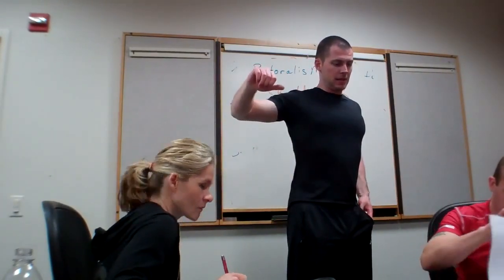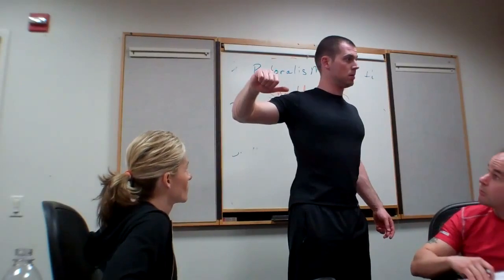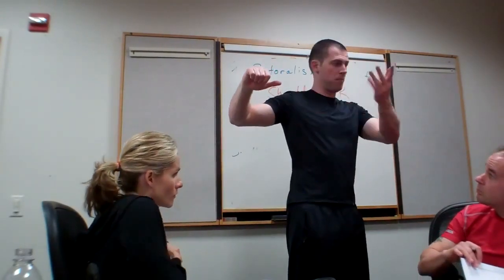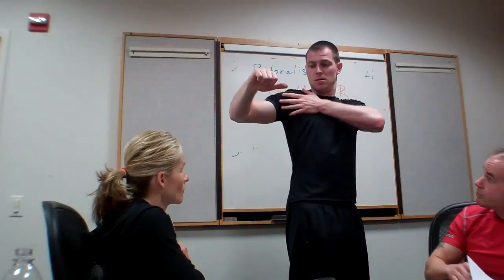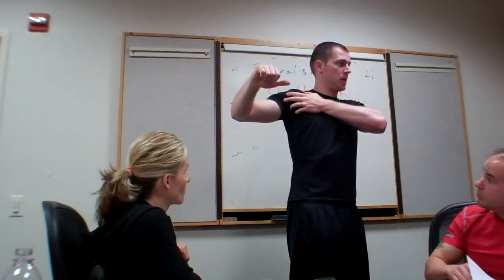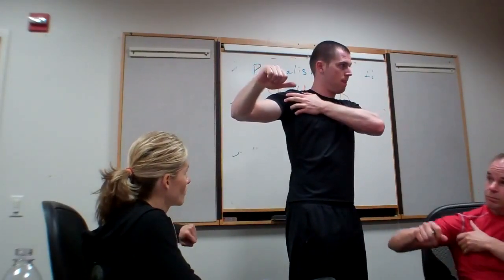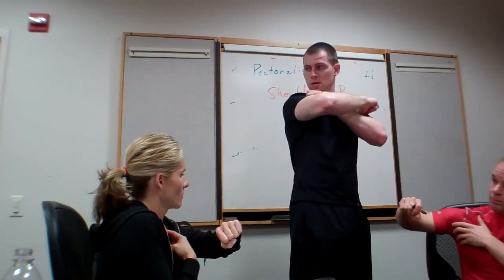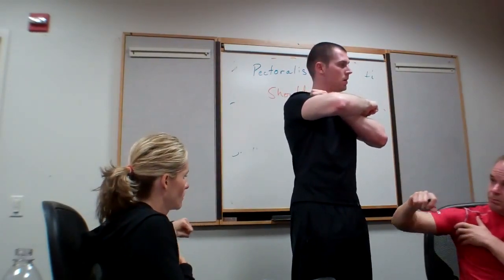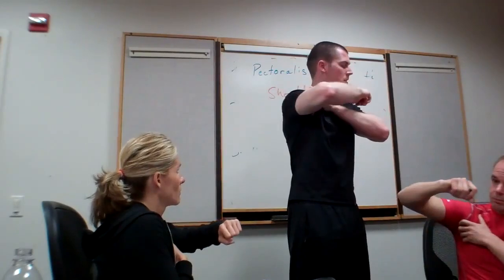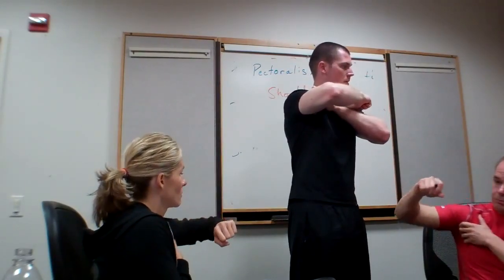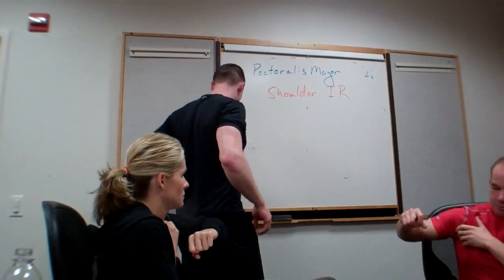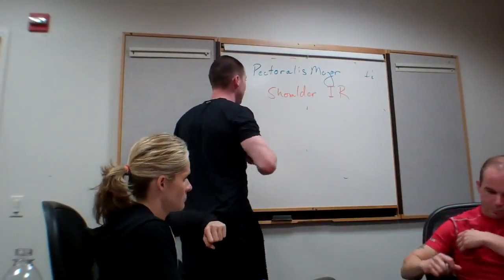If I put my arm out like this, it stretches my pec. Now where is it going to pull my arm? It's going to pull it this way. What is that joint action? Horizontal adduction. Those are the two big ones.